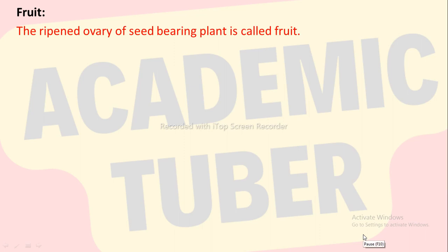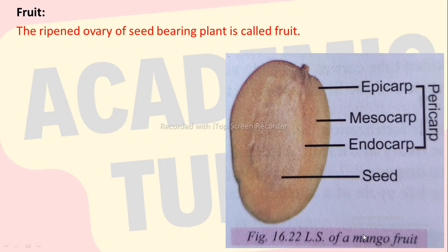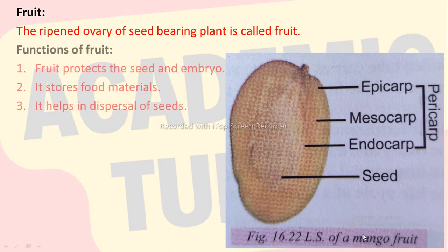Fruit. The ripened ovary of a seed-bearing plant is called fruit. Function of fruit: fruit protects the seed and embryo, it stores food materials, and it helps in dispersal of seed.